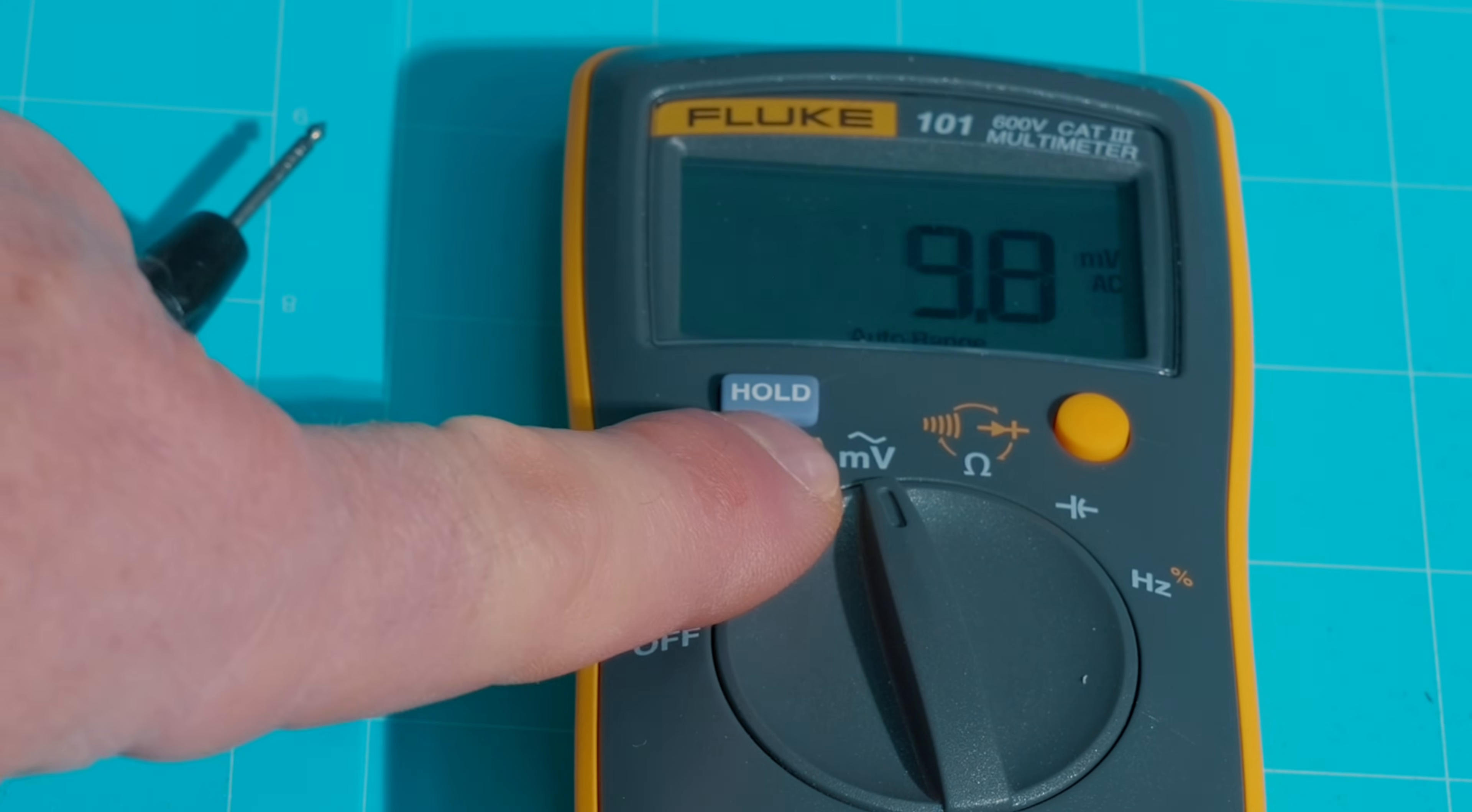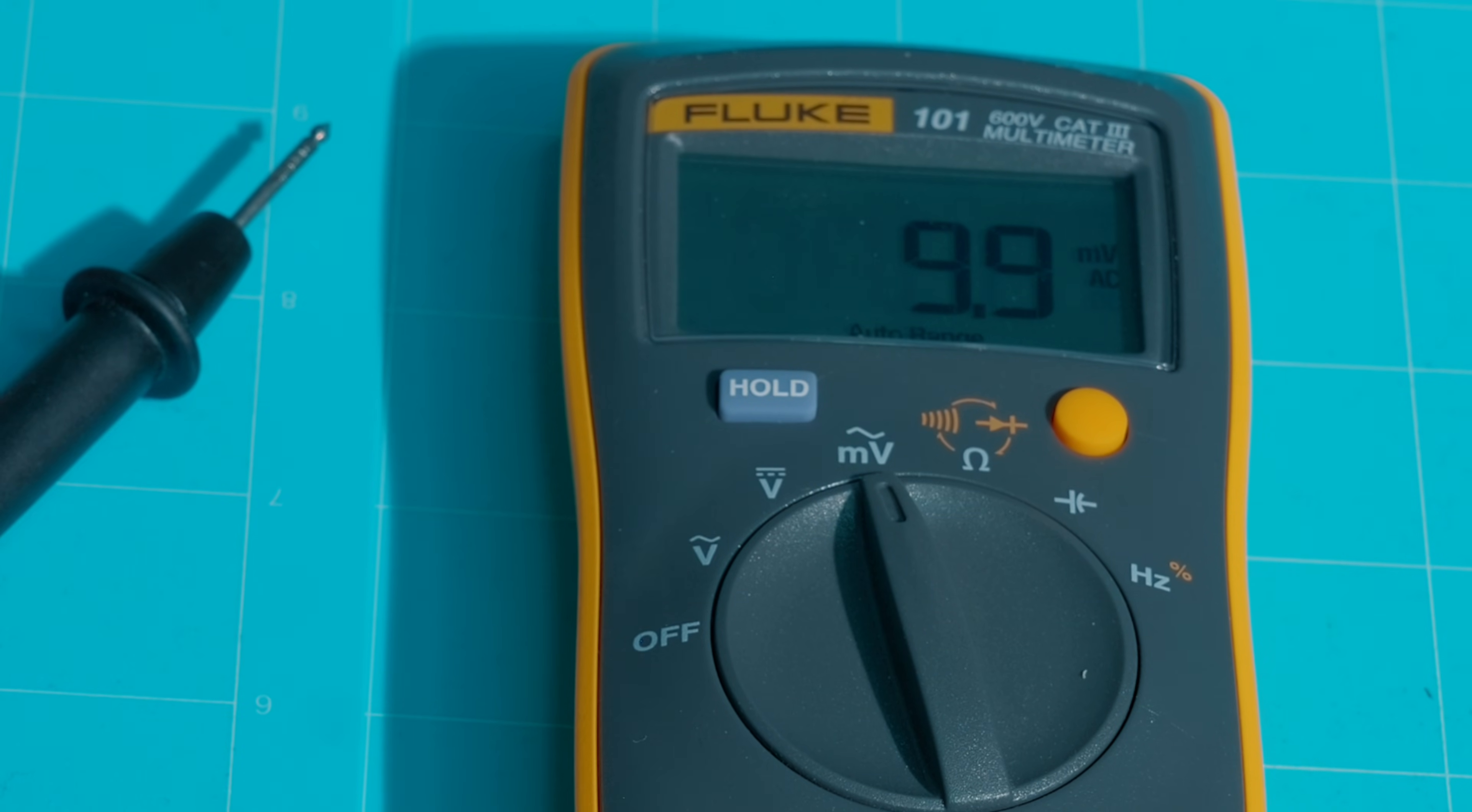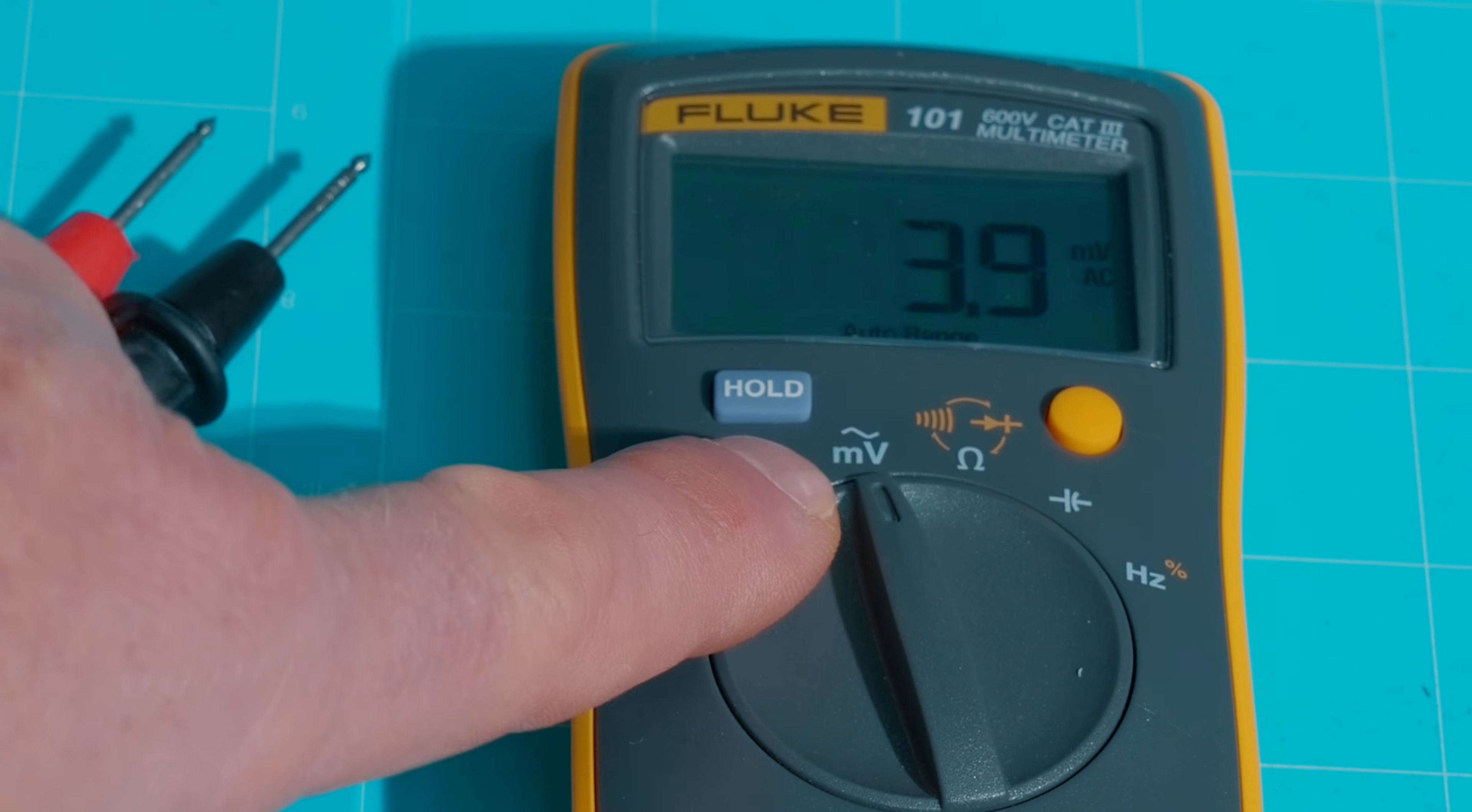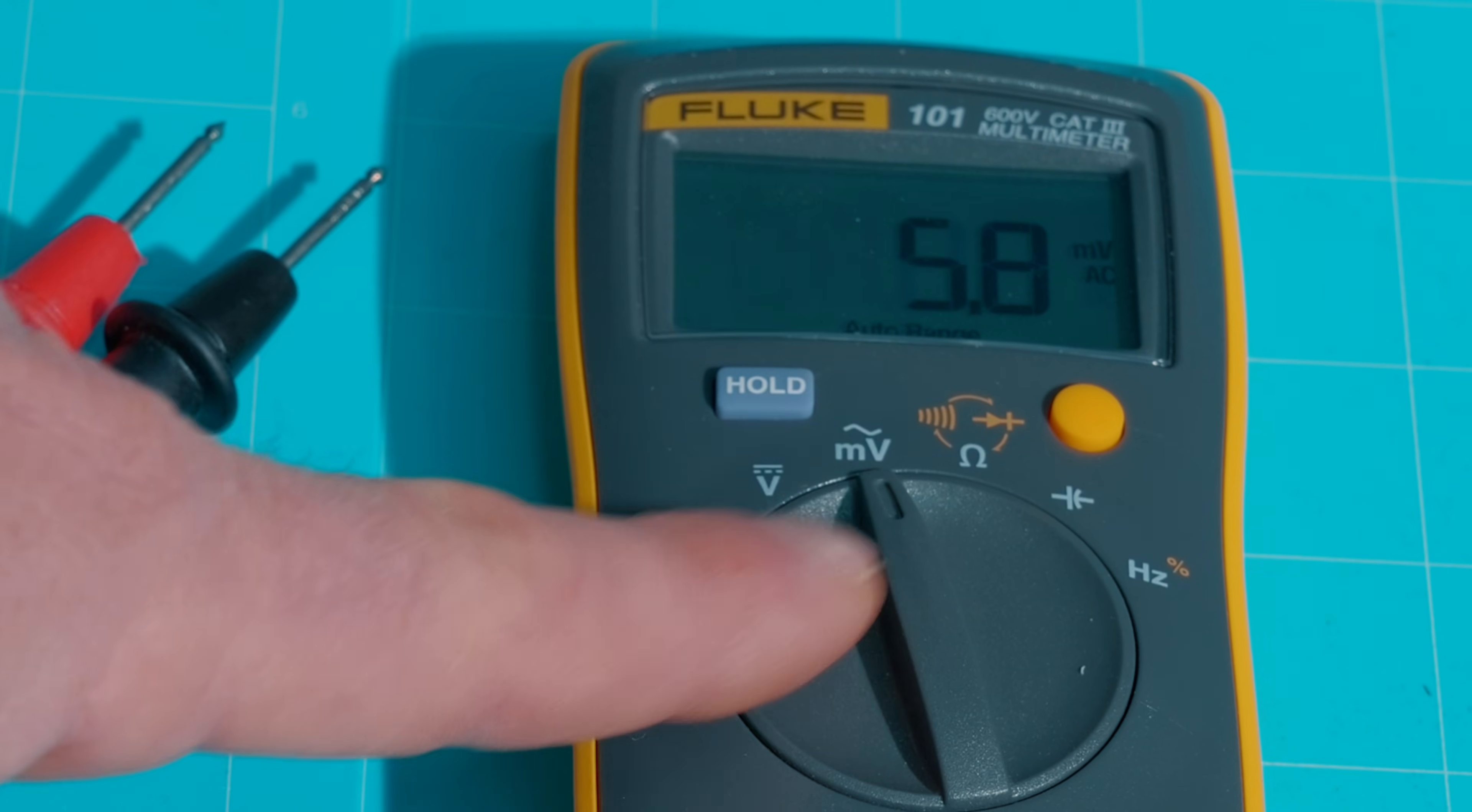All right, one more click up into the millivolt with the AC sign again. Now, I don't have anything to demonstrate this feature, and you are probably never going to use this as your average homeowner on your entry-level meter. It is a function that you could use if you've got an AC voltage source that's much less than 1 volt. Then you switch it into millivolts, and you'll get a much more accurate reading on your display in the millivolt setting.